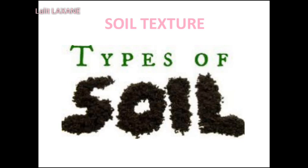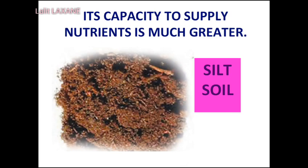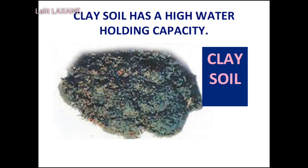Soil texture: Soil contains particles of different sizes. The texture of the soil is determined by the proportion of particles of various sizes in it. Sandy soil: The proportion of sand (large particles) is high in sandy soil. Water drains rapidly through sandy soil. It is easy to plow this soil, but it is less fertile, because the particles are made up of a mineral called silicon dioxide (quartz) which does not dissolve in water, giving it very little capacity to supply nutrients. Silt soil: The particles of silt soil are of medium size. Silt soil contains a large proportion of organic materials and its capacity to supply nutrients is much greater. Silt soil is also called sedimentary soil.